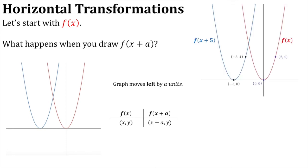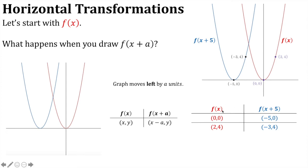Looking at a more specialised example: on the graph of f of x we have the points (0, 0) and (2, 4). It's f(x + 5) that we've drawn, so we need to subtract 5 from our x-ordinates: 0 minus 5 gives (−5, 0), and 2 minus 5 is −3, giving (−3, 4).